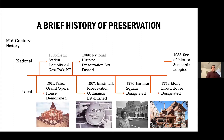We're going to jump to some mid-century history. This is a period of change within the country and also within Denver that led to another big shift within the preservation movement. In 1961, the Tabor Grand Opera House was demolished here in Denver. I think that is a loss that is still felt today — a fantastic historic building that was torn down, and it's just one of many that was lost to urban renewal in the post-war era.